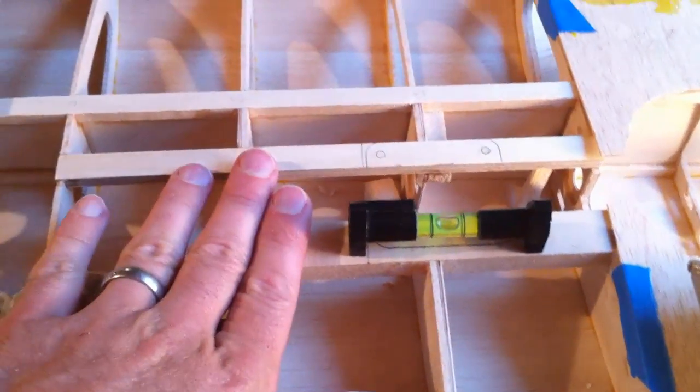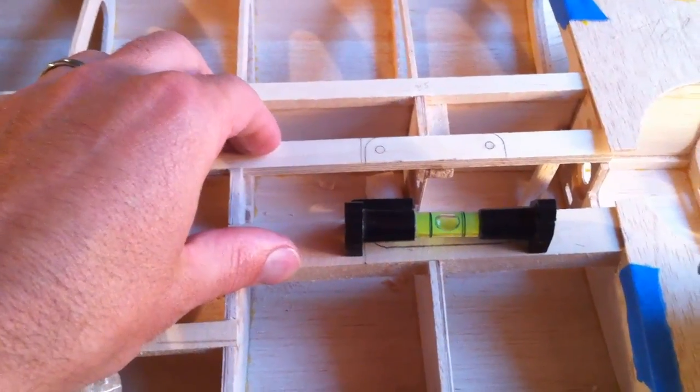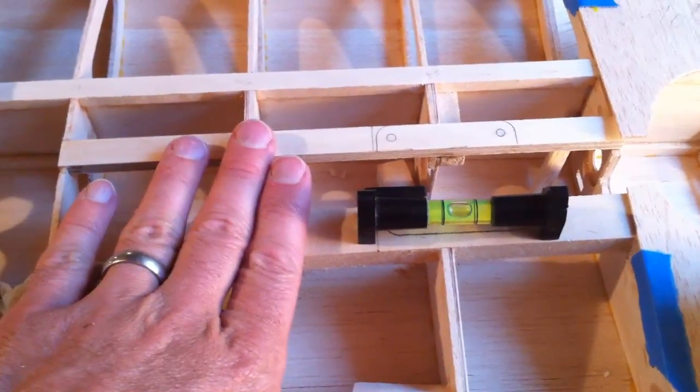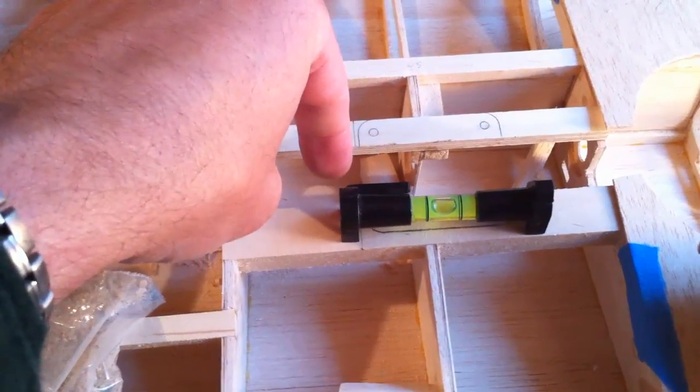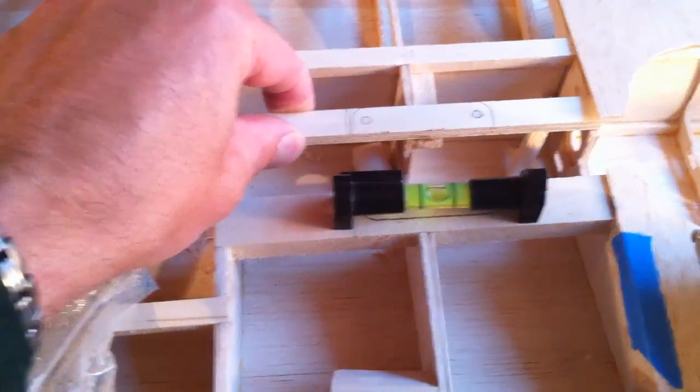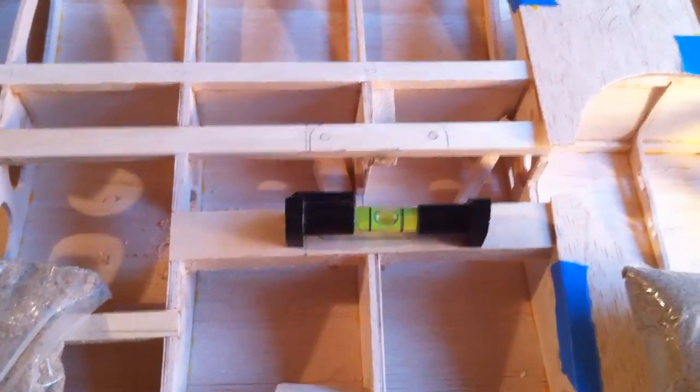With that as flat as possible, I'm going to drill those holes now knowing that I've got this aligned as best as I can to make those holes as perpendicular as possible to the landing gear rails themselves. My next step is to go ahead and drill those holes.